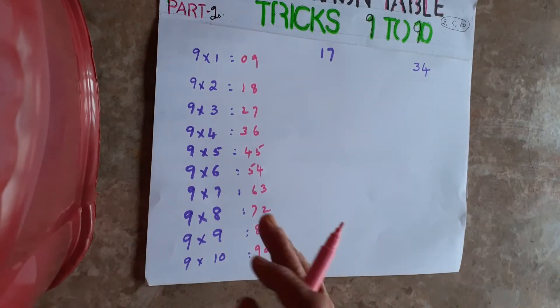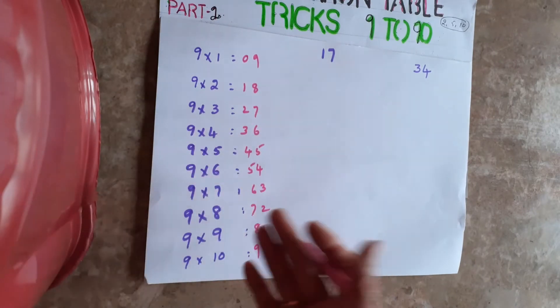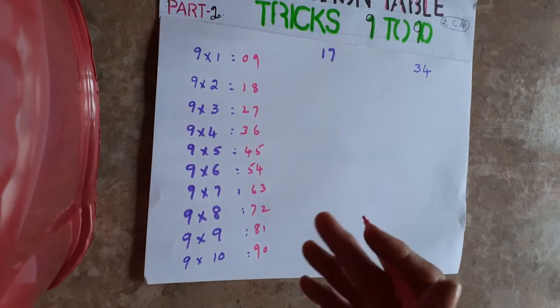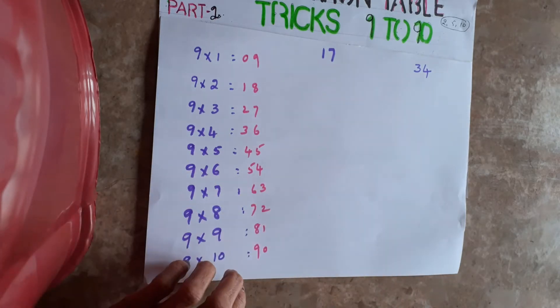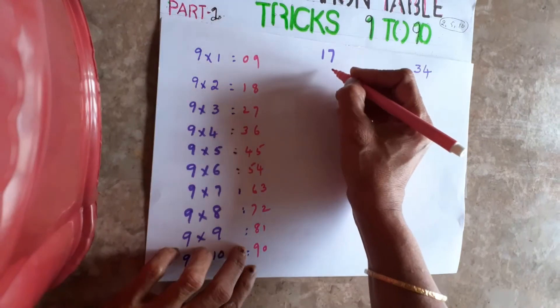Suppose double-digit numbers are there — 17, 34, 54, 56, like that. See, 17 is there — how will you do it? There's a small trick I'll tell you. Just see.